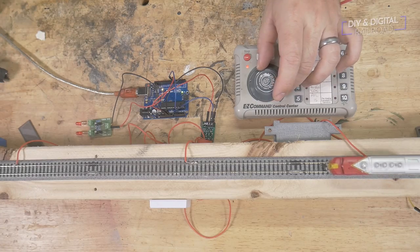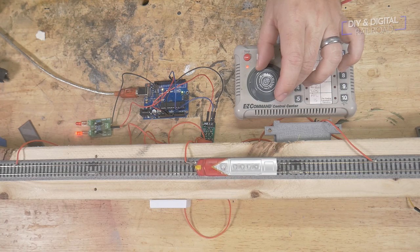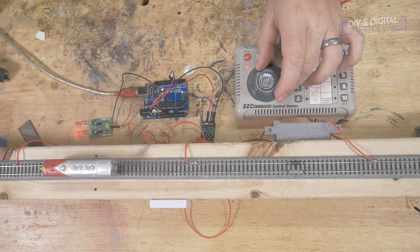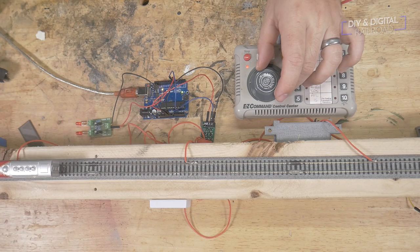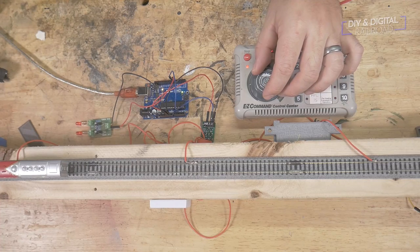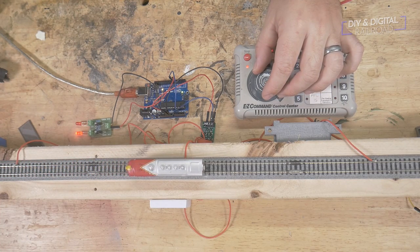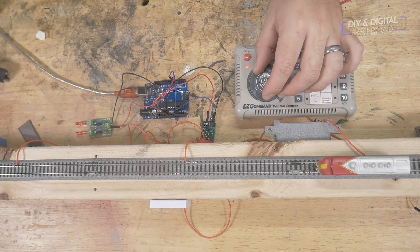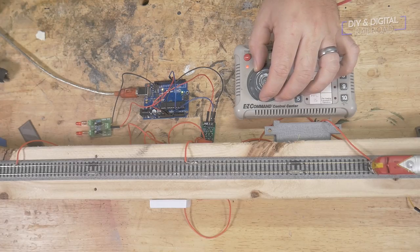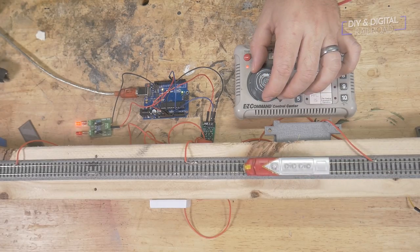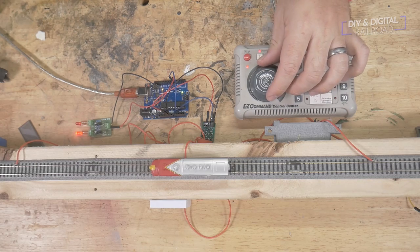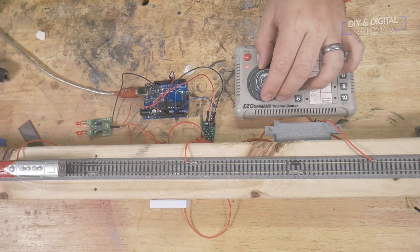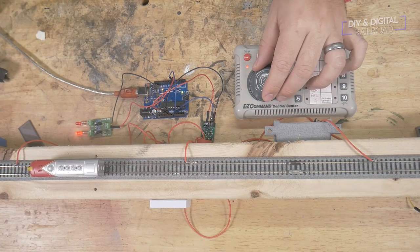We start off by moving forwards through the detection zone and you can see that the flasher board starts flashing the LEDs. And once it exits, it turns them off. We now back the opposite direction through the detection zone and the flasher board comes back on and turns off when the train exits the zone. We now move the train into the detection zone, stop, and back out the direction that we came. You can see that it still turns on and off accordingly. And it even works if you're partially in and then come back out.